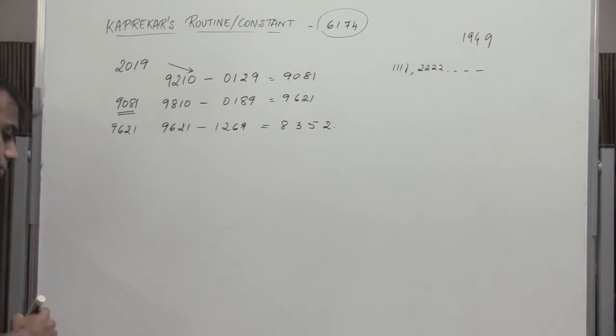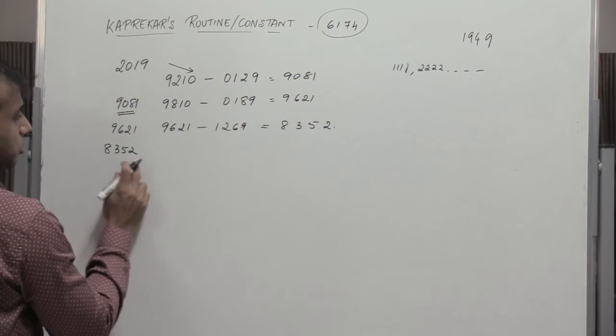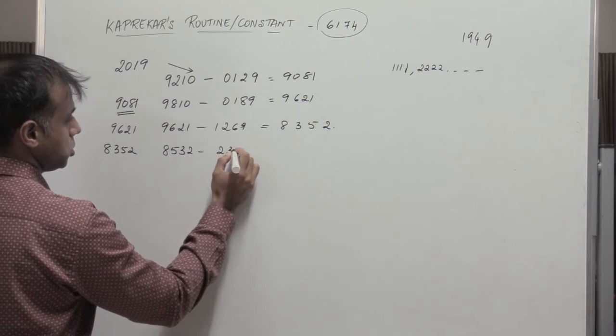So again consider this number 8352. Write them in the descending order. So 8532 minus 2358. And finally we get 6174.